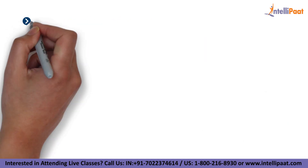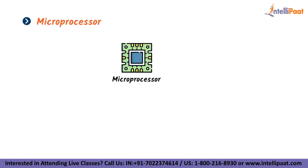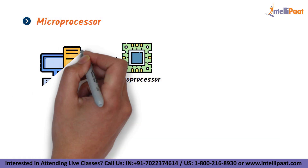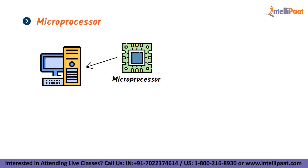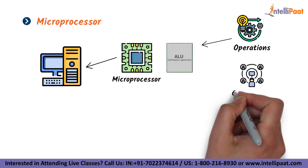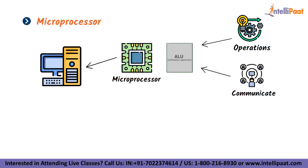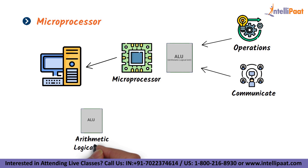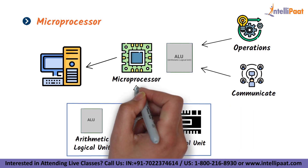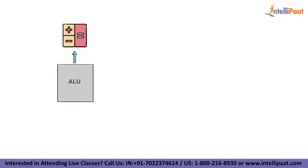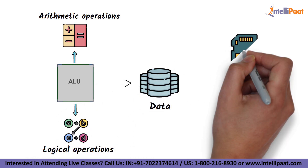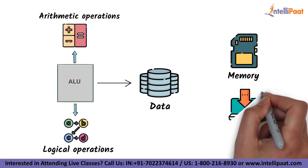Now let's talk about microprocessors. A microprocessor is a microcomputer's controlling unit manufactured on a tiny chip that can conduct ALU operations and communicate with other devices linked to it. An ALU, register array, and control unit make up a microprocessor.